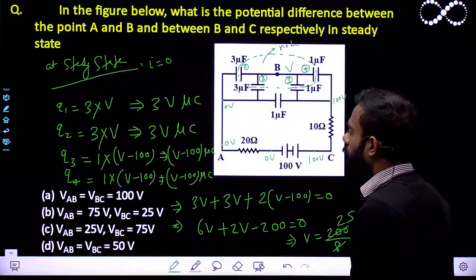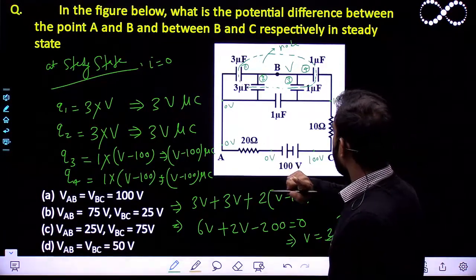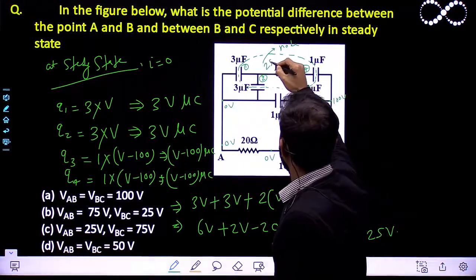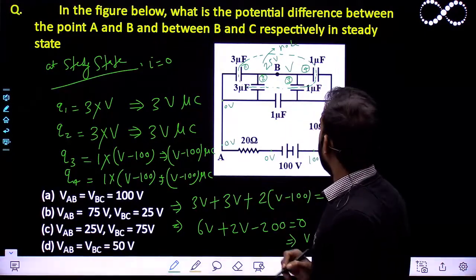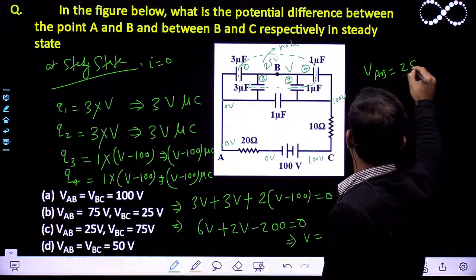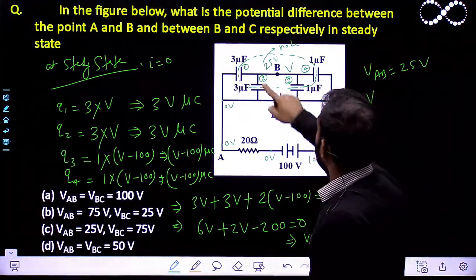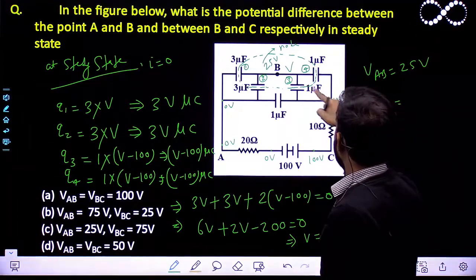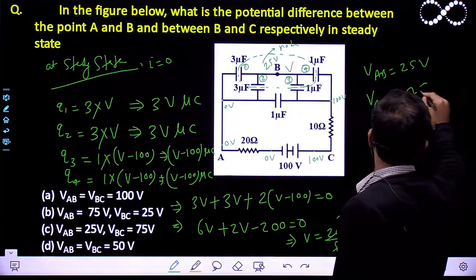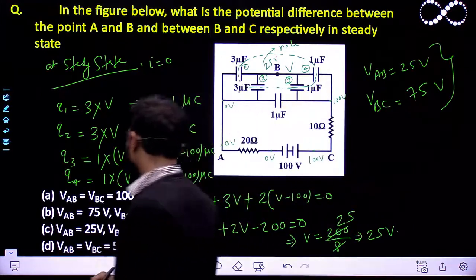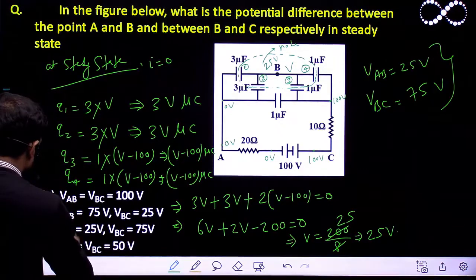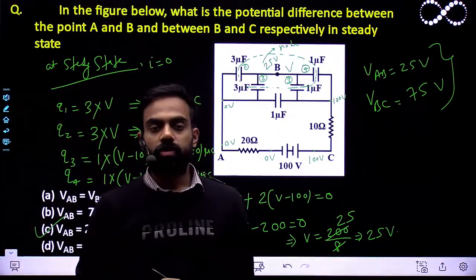So V is coming out to be 25 volts. Now, the potential difference between A and B: A is at 0 volts and B is at 25 volts, so V_AB = 25 volts. For V_BC: this side is 100 volts and B is 25 volts, so V_BC = 75 volts — wait, that will be 25 volts. So V_AB = 25 volts and V_BC = 25 volts. Let us see which option is matching — V_AB is 25 and V_BC is 25 volts, so option C is correct. I hope you understood this question.